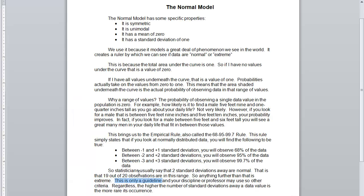Now, it's only a guideline, and your discipline or your professor may use other criteria. I have seen professors in books say that it's got to be more than 3. Rarely, I see 2.5, but 2 is the gold standard, 3 is the second most common, and anything outside of that was probably super specific to your discipline and the type of data that you are collecting. Regardless of that, however, the higher the number of standard deviations away a data value is, the more rare its occurrence. The further away you get, the less likely it is.